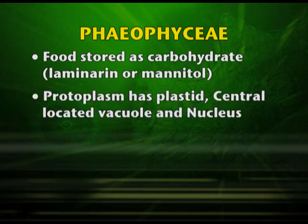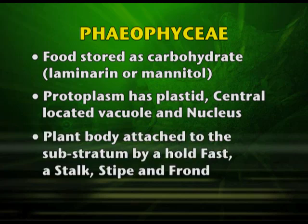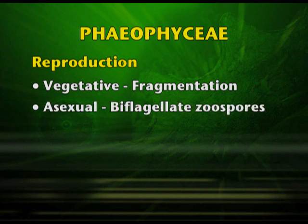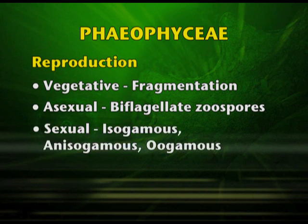The protoplasm has plastids and they have a centrally located vacuole and nucleus. The plant body is attached to the substratum by a holdfast, a stalk known as the stipe, and frond which are the leaf-like appendages. Reproduction may be by vegetative means through fragmentation. Asexual reproduction may be by biflagellate zoospores, and sexual reproduction is isogamous, anisogamous, and oogamous.